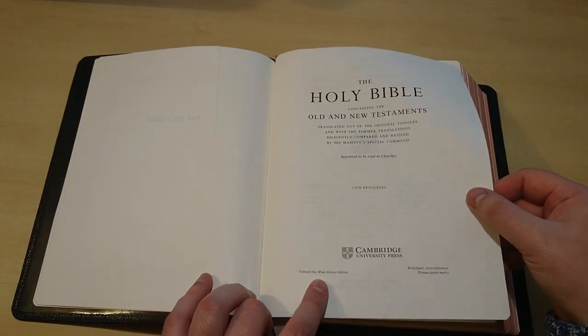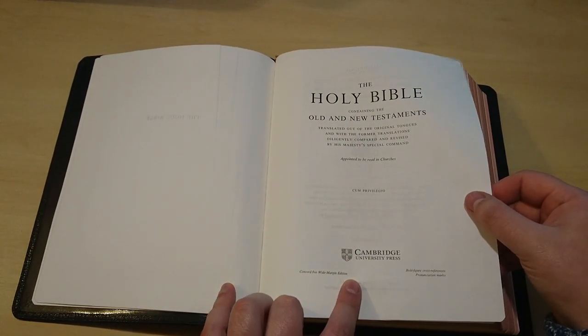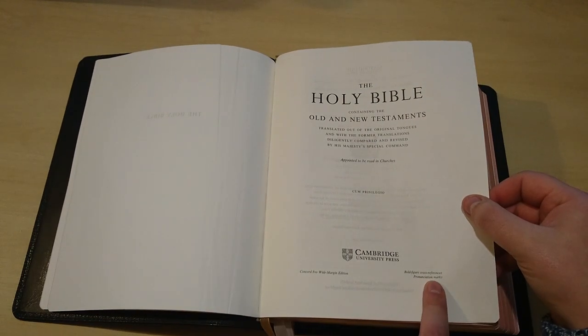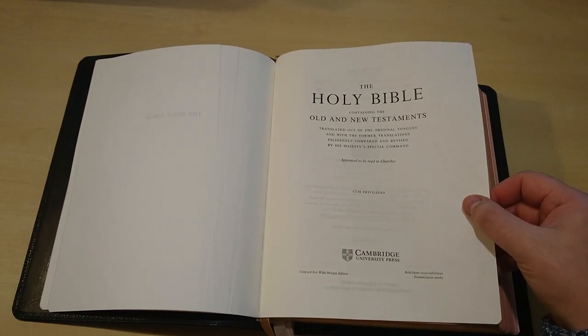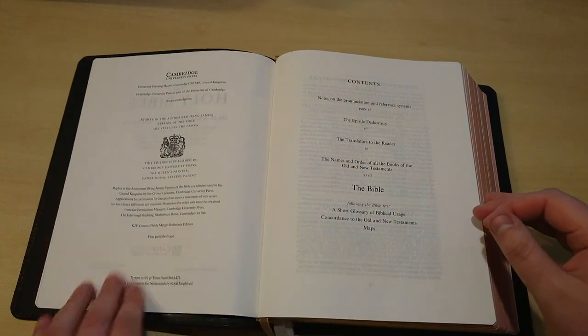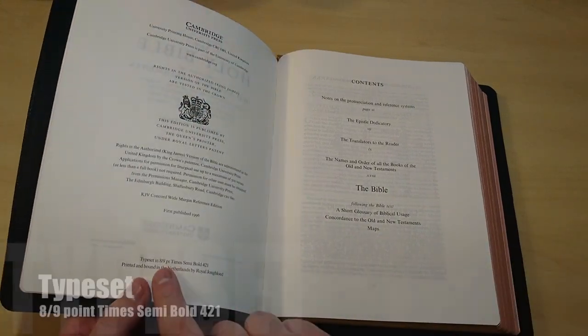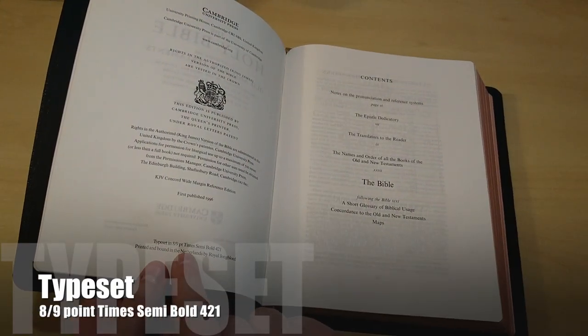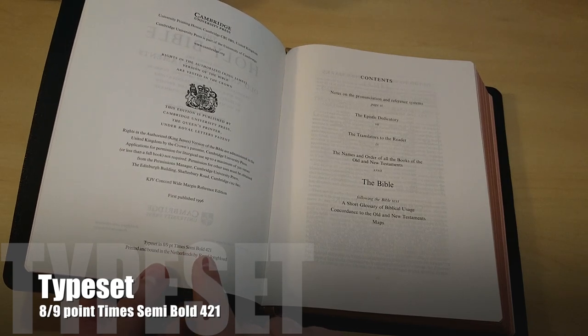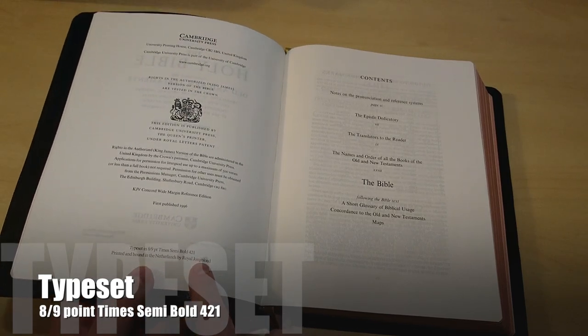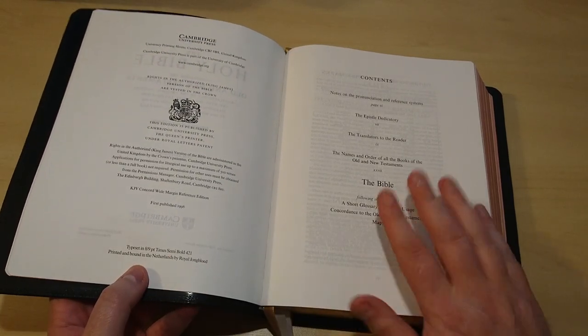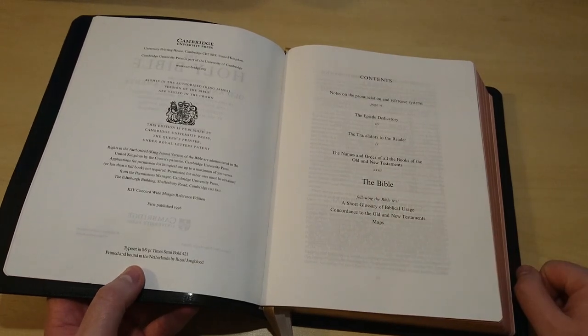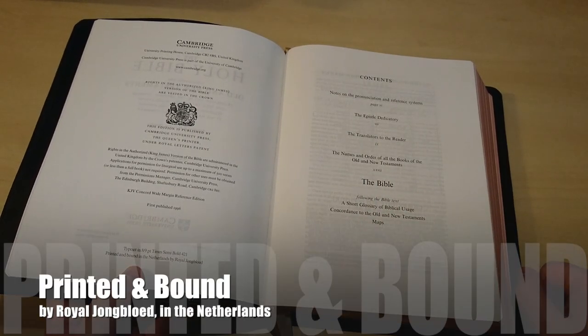This is indeed the Concord Wide Margin edition, as you can see here: bold figure, cross reference, and with pronunciation marks as well. The typeset is 8 to 9 point Times semi-bold. This is also printed and bound in the Netherlands by Royal Jongbloed, so that's also good quality paper and good type of printing, very nice indeed.